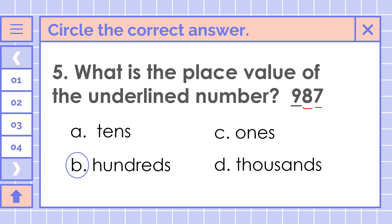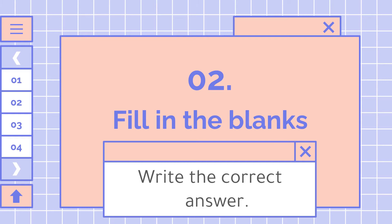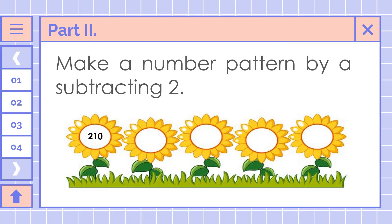Let's move on to our next part, which is fill in the blanks. We're going to write the correct answer. For this one, we're going to make a number pattern by subtracting 2, starting at 210. 210 minus 2 — what is the next number? It is 208. Next, 208 minus 2 is 206. Then 206 minus 2 is 204. And the last number is 202.